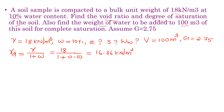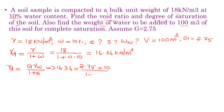We know the equation connecting gamma D and E: gamma D is equal to G times gamma W divided by 1 plus E. We know gamma D is 16.36, so 16.36 is equal to 2.75 times 10 divided by 1 plus E. Solving this equation, we get the value of E as 0.68.